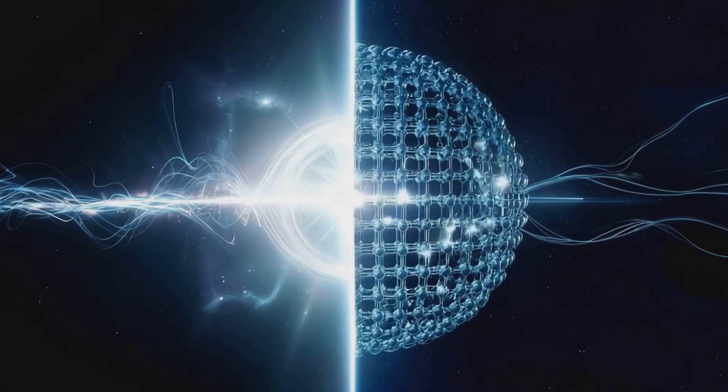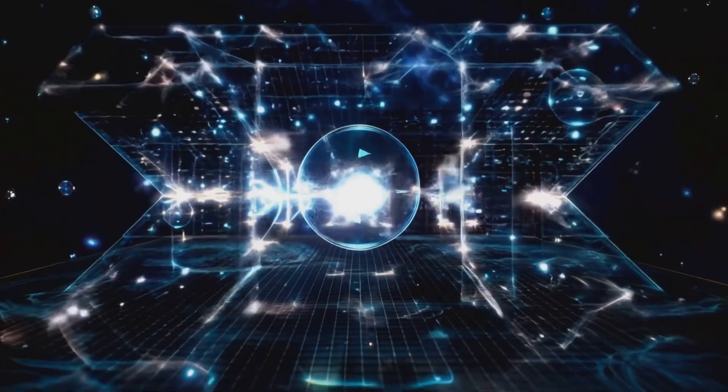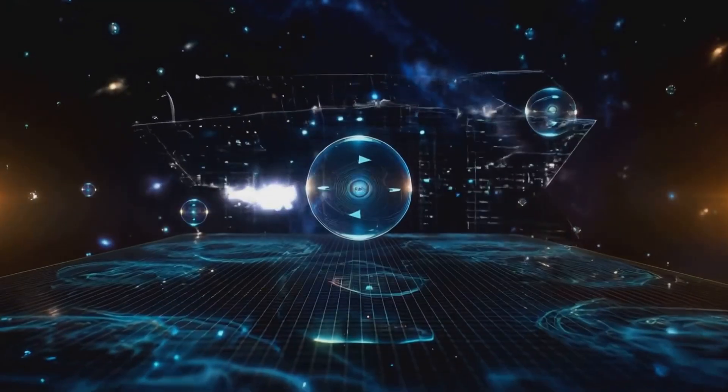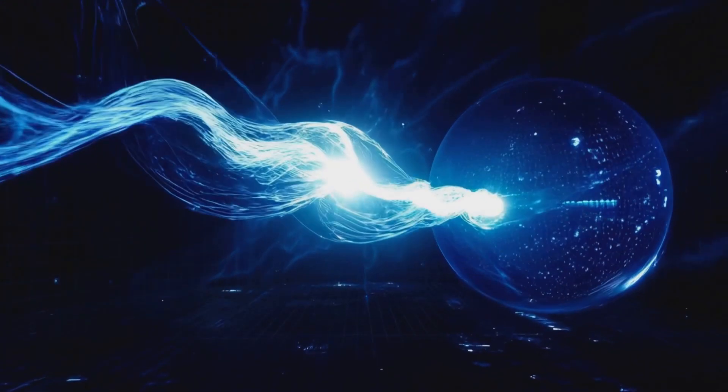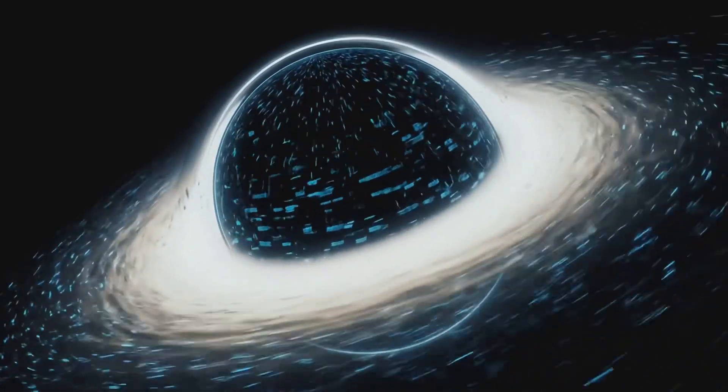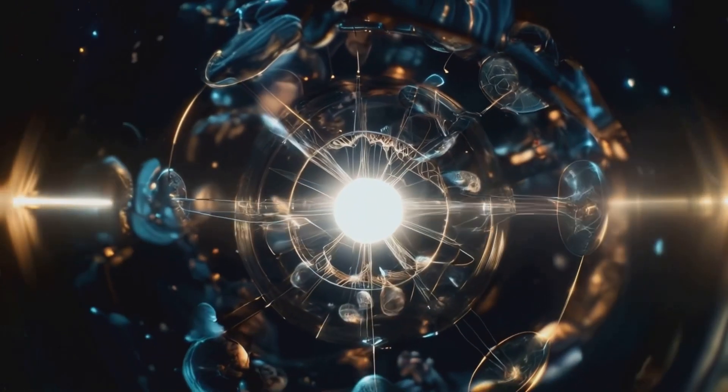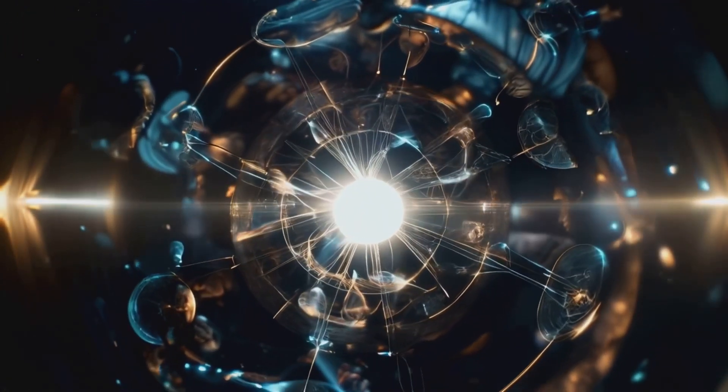Imagine the event horizon as a quantum mirror. Information falls into the black hole, passing through the event horizon. This information isn't lost, but encoded onto the surface of the event horizon, becoming part of the universe's holographic blueprint. This process is key to understanding how the universe maintains its holographic nature.